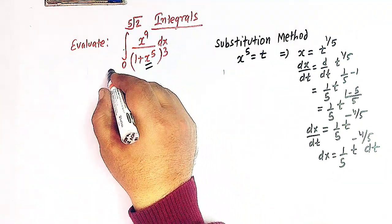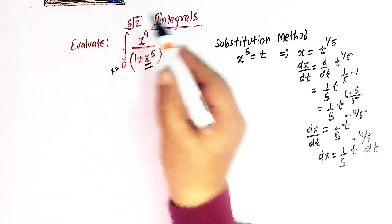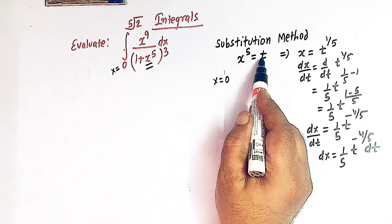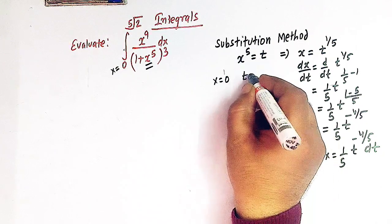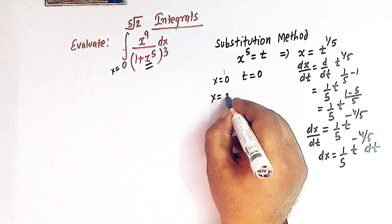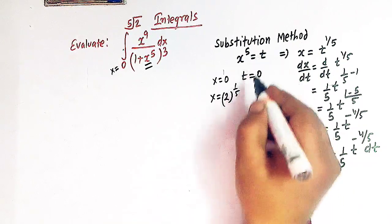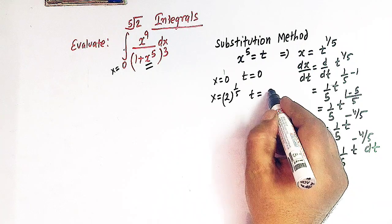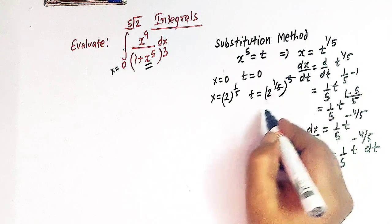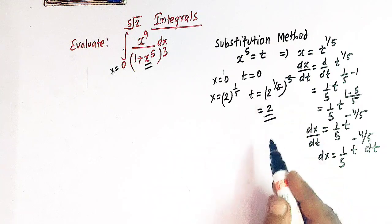Now the limits of integration vary from 0 to the fifth root of 2. When x is equal to 0, the value of t is also equal to 0. When x is the fifth root of 2, then t is given by 2 raised to 1 over 5 raised to 5, so the 5s cancel and we are left with 2. So t varies from 0 to 2.